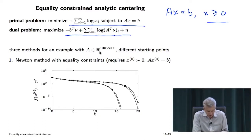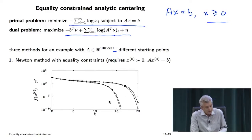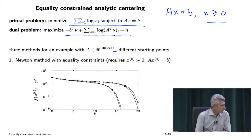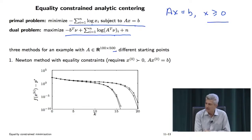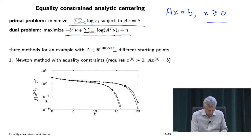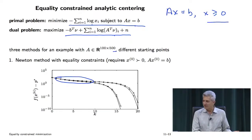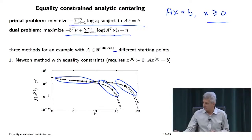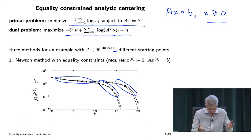Let's take Newton's method with equality constraints on a problem with 500 variables and 100 equality constraints. If you run Newton's method with four different starting points, you get traces showing very Newton-ish behavior — quadratic convergence at the end. This is what you should see: a 10^15 range, with what may appear to be flat behavior early on followed by rapid convergence. The key Newton behavior is at the end, which should also correspond to the place where you take undamped steps with step size one. The initialization required knowing a positive vector satisfying Ax equals b, which can be a pain for a general problem.